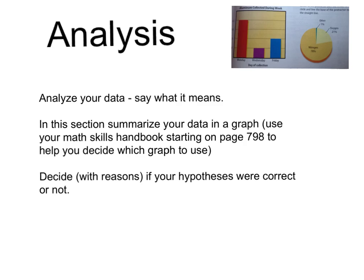The next stage of the write-up is the analysis. In the analysis, you analyze your data and explain what it means. If possible, try to summarize your data in a graph — you can use the Math Skills Handbook on pages 798–799 to help you decide which type of graph to use. In your analysis, decide with reasons whether your hypotheses were correct or not.